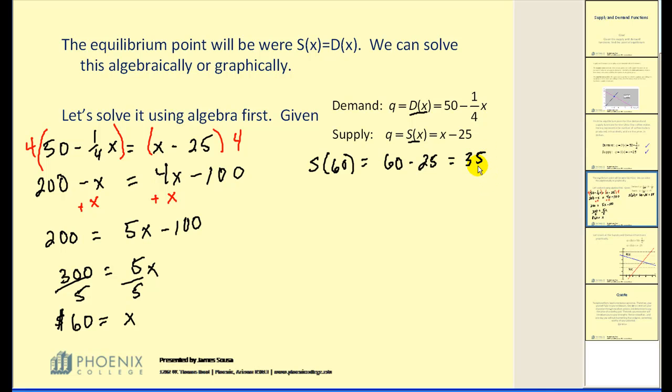So the number of items, or the quantity, is equal to 35. But remember from the original problem, this was in hundreds. So to get the true quantity, we have to multiply this by 100 to get 3500.